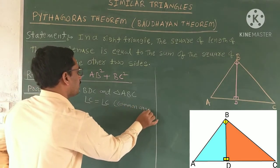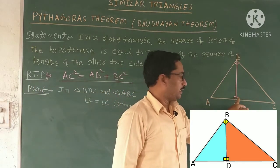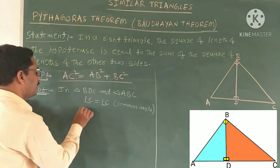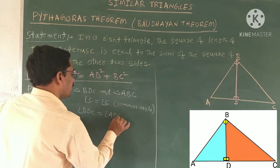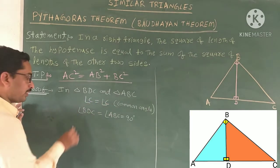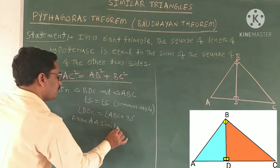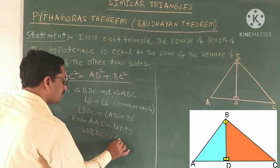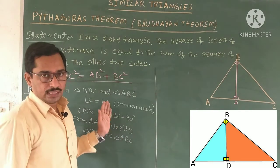In the same way as before, angle at D in triangle BDC is 90 degrees, and angle at B in triangle ABC is also 90 degrees. So angle BDC equals angle B, both equal to 90 degrees. Since two angles are equal, by AA similarity, triangle BDC is similar to triangle ABC.